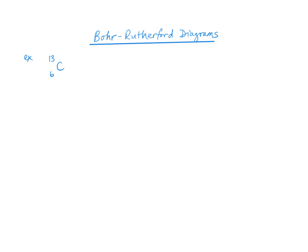Looking at the notation here, the atomic number is the bottom number. This tells us the number of protons — six protons. When we subtract mass minus atomic number, it tells us the number of neutrons. And if there's no charge, then the protons equal the electrons. So six protons, six electrons.